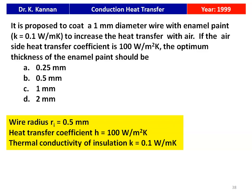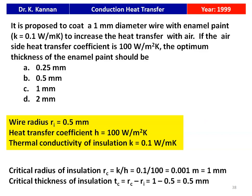Given data: wire radius R_I = 0.5 mm (diameter 1 mm), heat transfer coefficient H = 100 W/m²K, thermal conductivity K = 0.1 W/mK. Critical radius R_C = K/H = 0.1/100 = 0.001 m = 1 mm. Critical thickness T_C = R_C − R_I = 1 − 0.5 = 0.5 mm. So the optimum insulation thickness is 0.5 mm for maximum heat transfer.